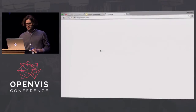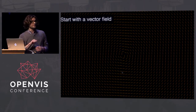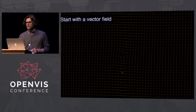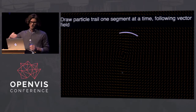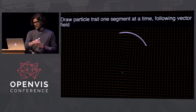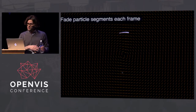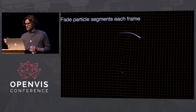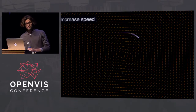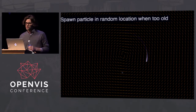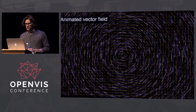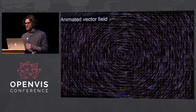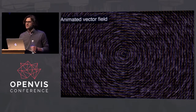I want to go into the per-particle animation in depth. We start with a vector field — maybe something like a typhoon with circular motion. We draw particles one segment at a time; each time we draw a new segment, we look at the direction of the vector at that location and draw a line in that direction. If we fade previously drawn particles, we get a nice little tail. Increase the speed, spawn particles at random places when they're too old, add more particles — and we get undeniably circular motion. That's basically how it's done.